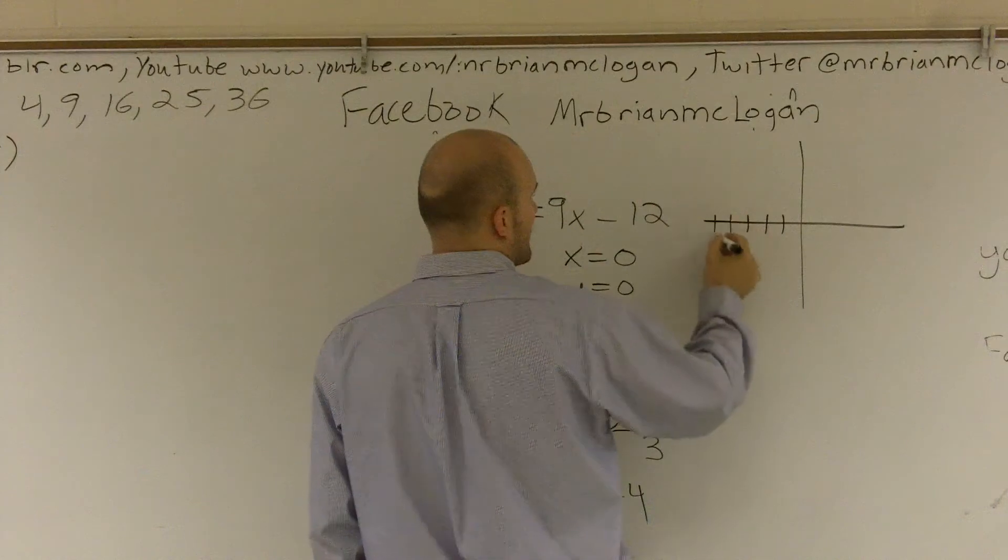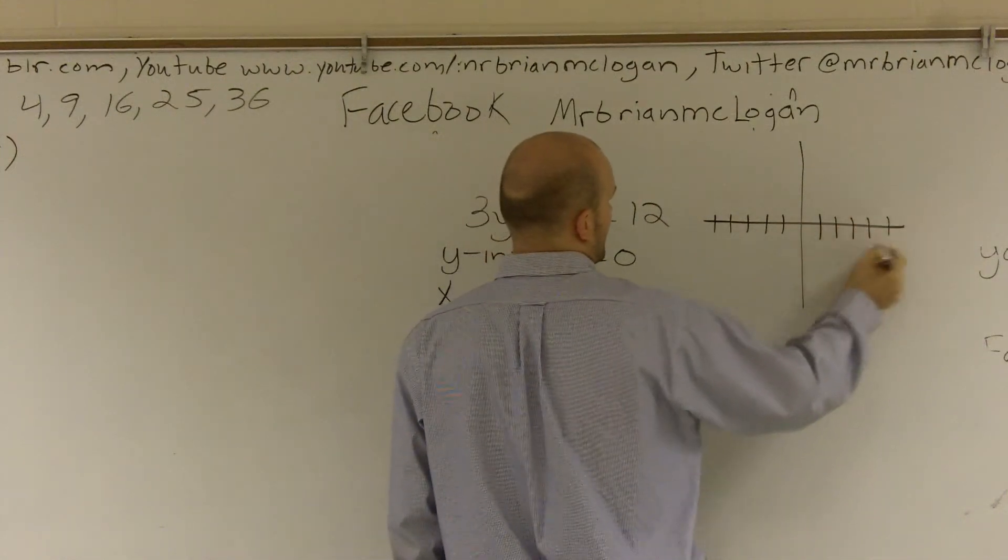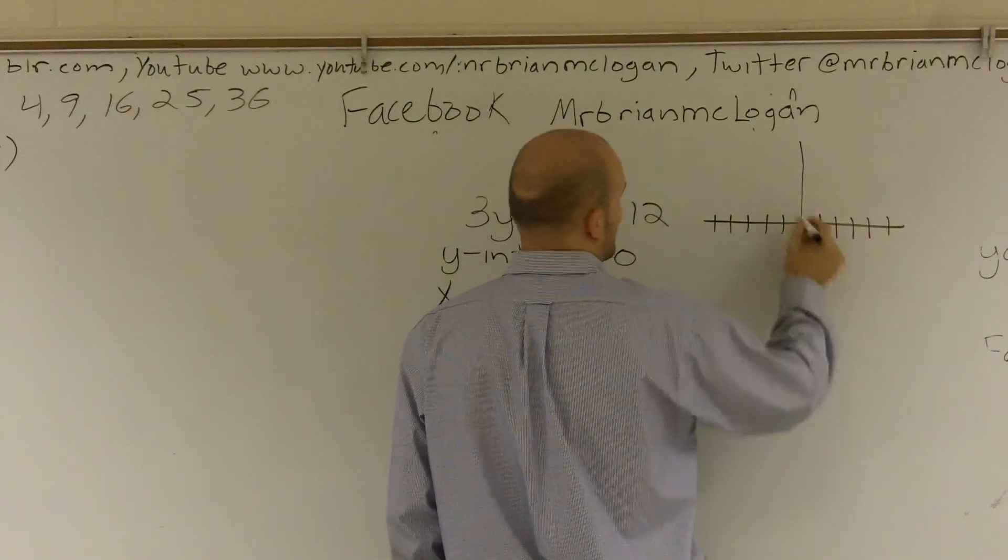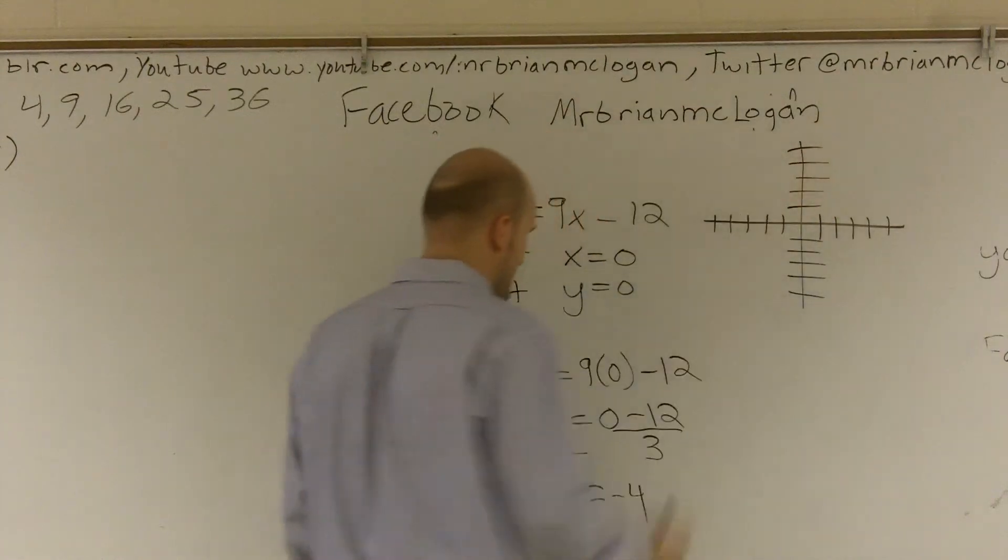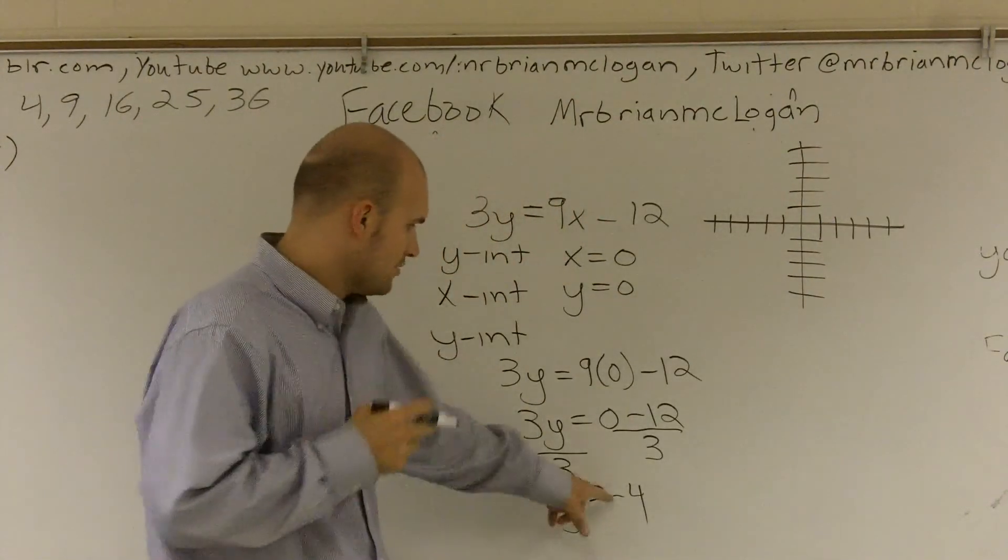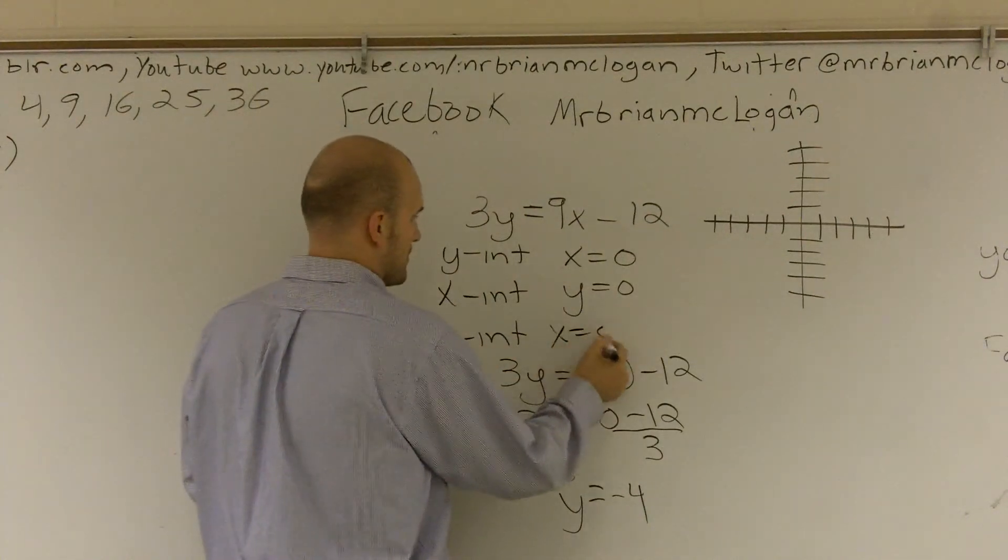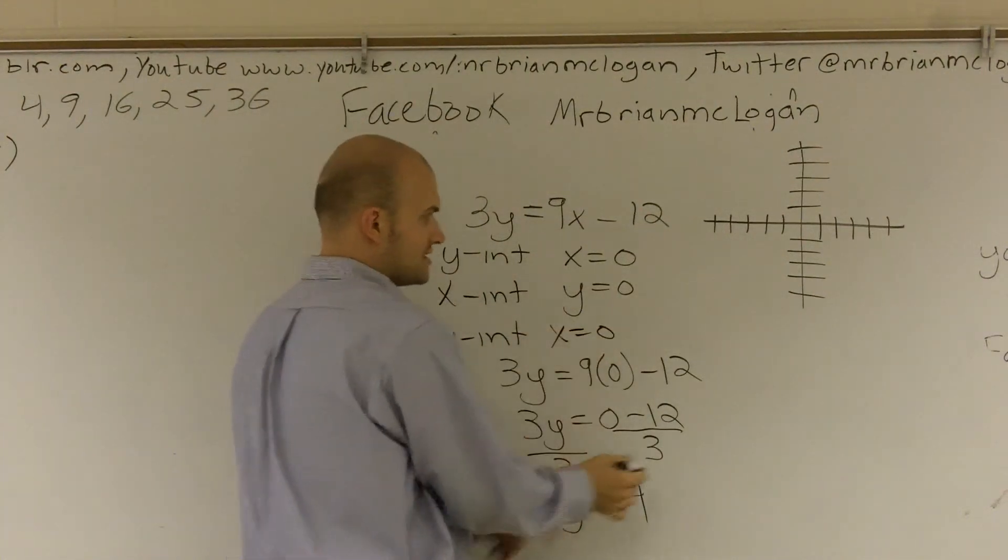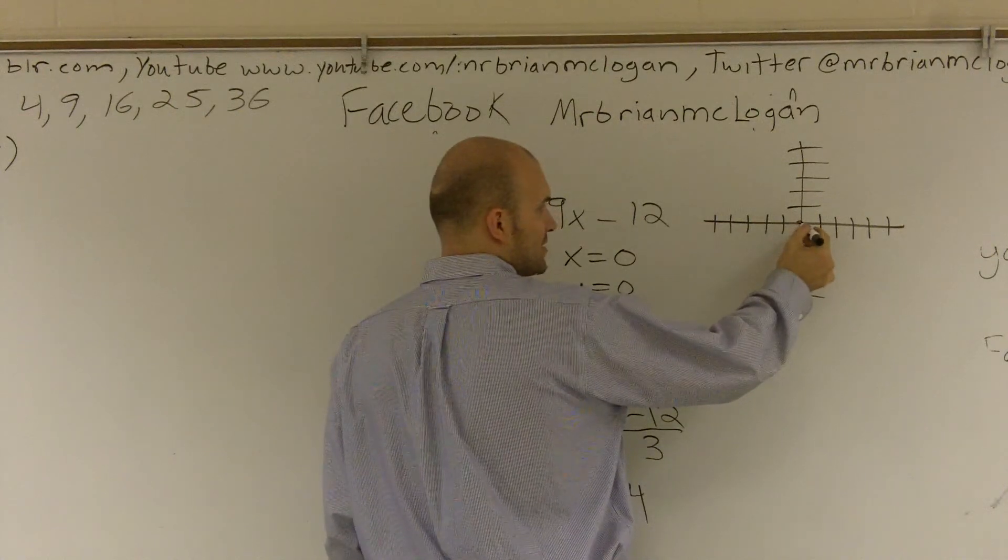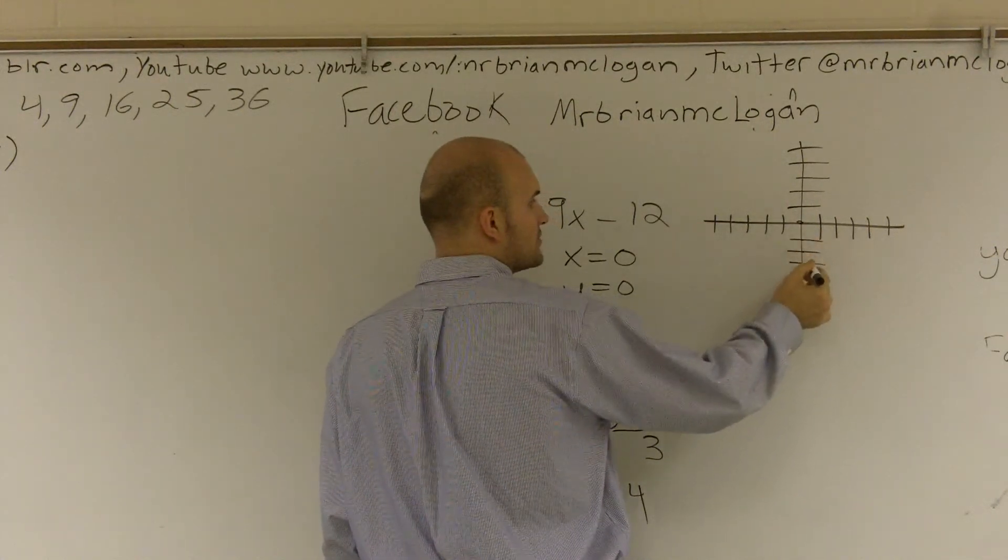One, two, three, four, five. One, two, three, four, five. So if I know my y equals negative four when x equals zero, x equals zero, y equals negative four. So x equals zero, y equals negative four - one, two, three, four.